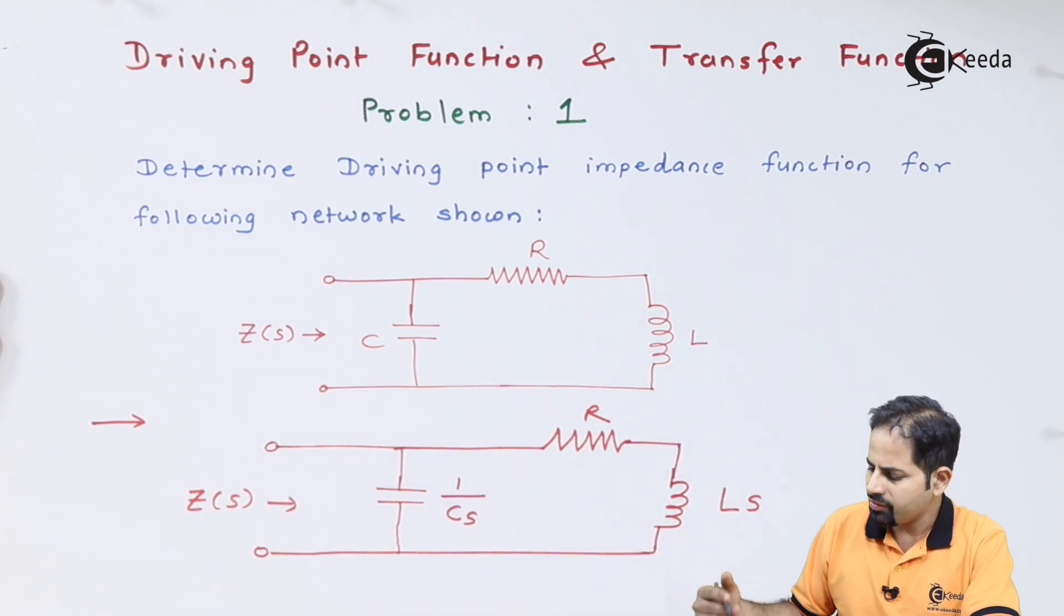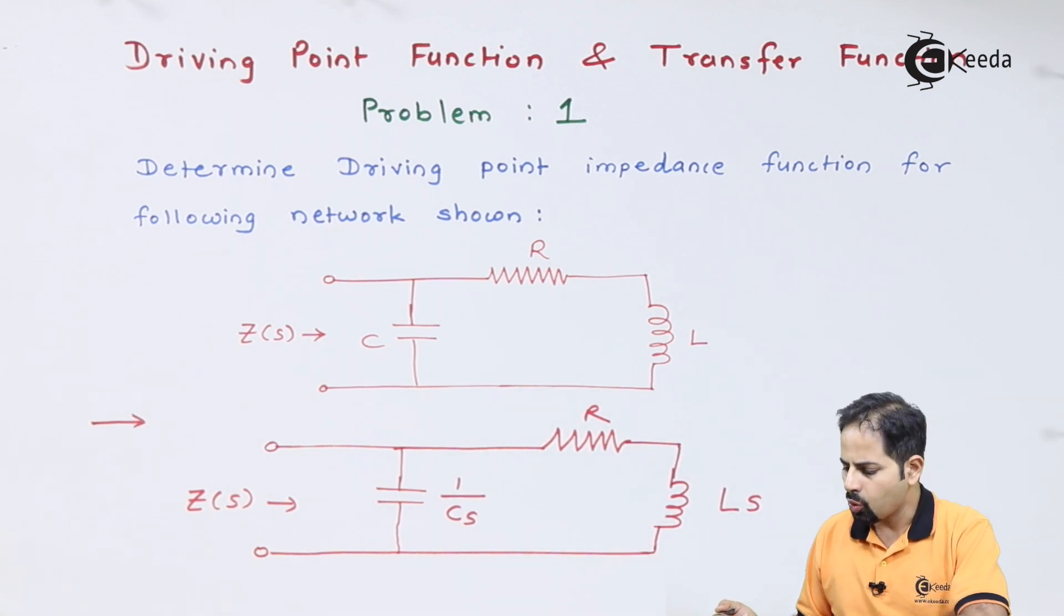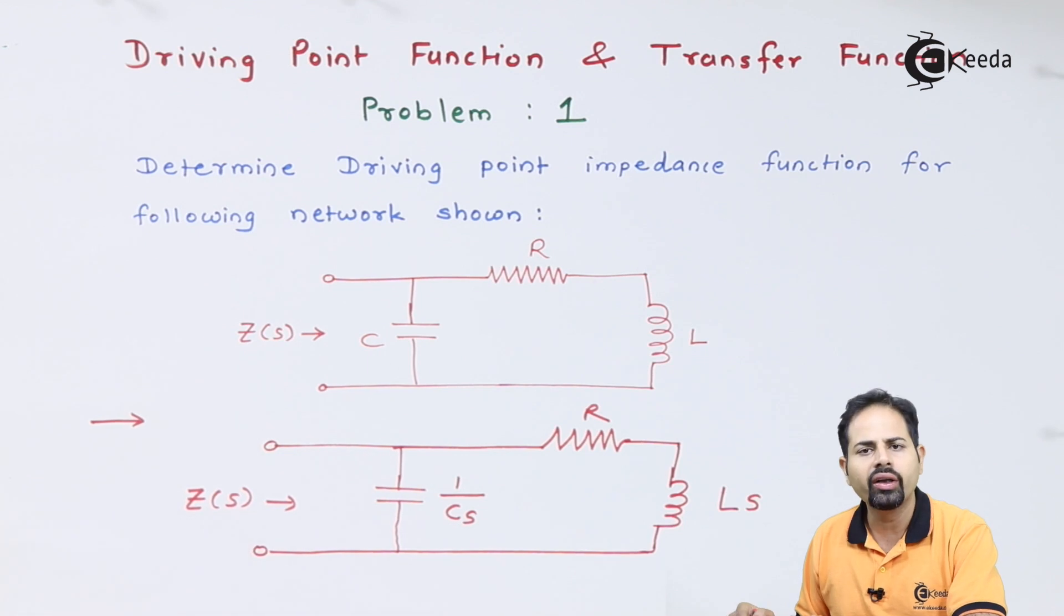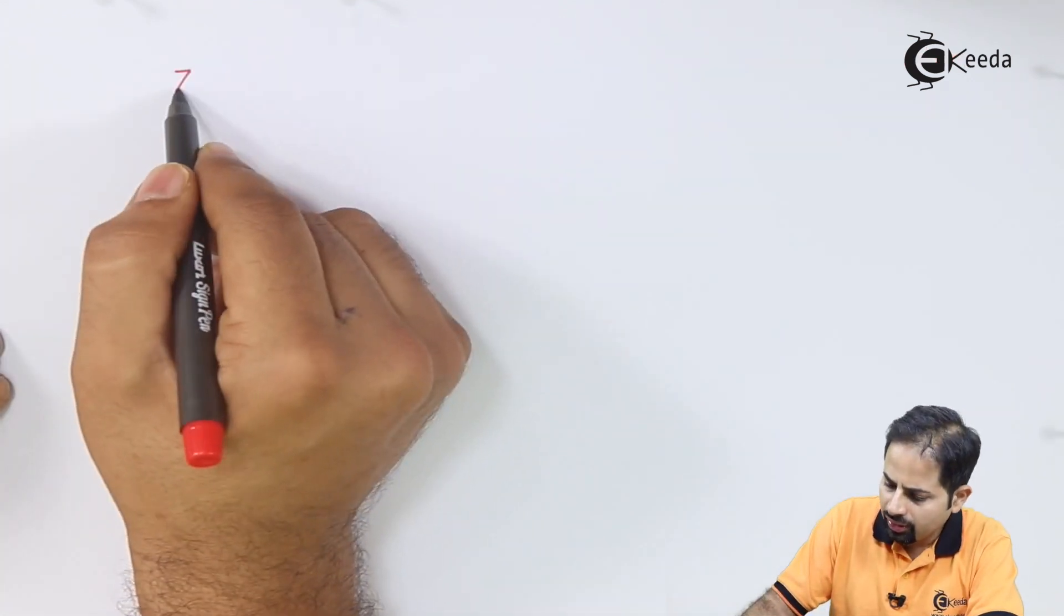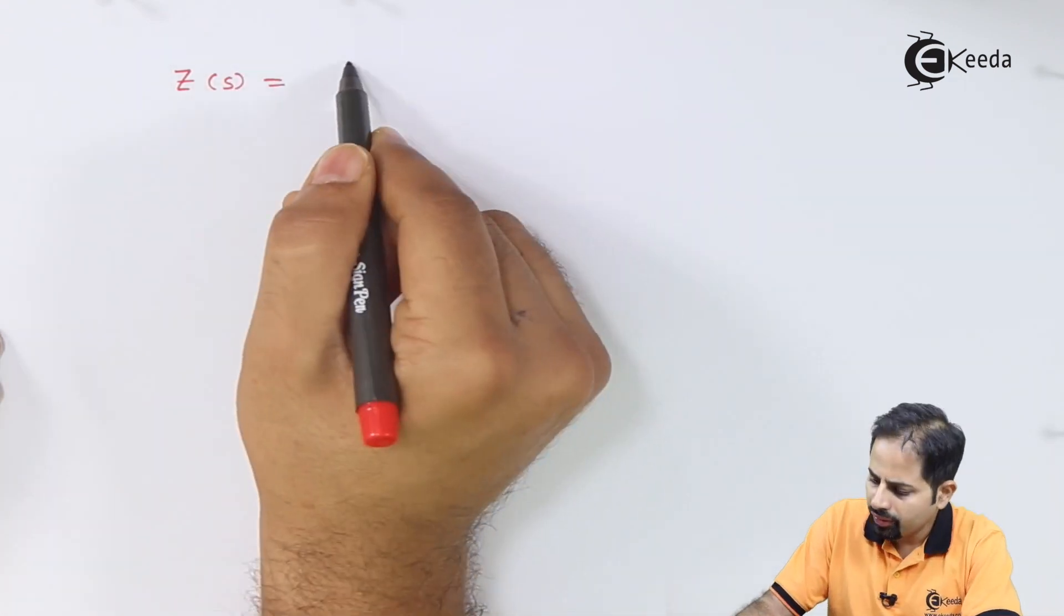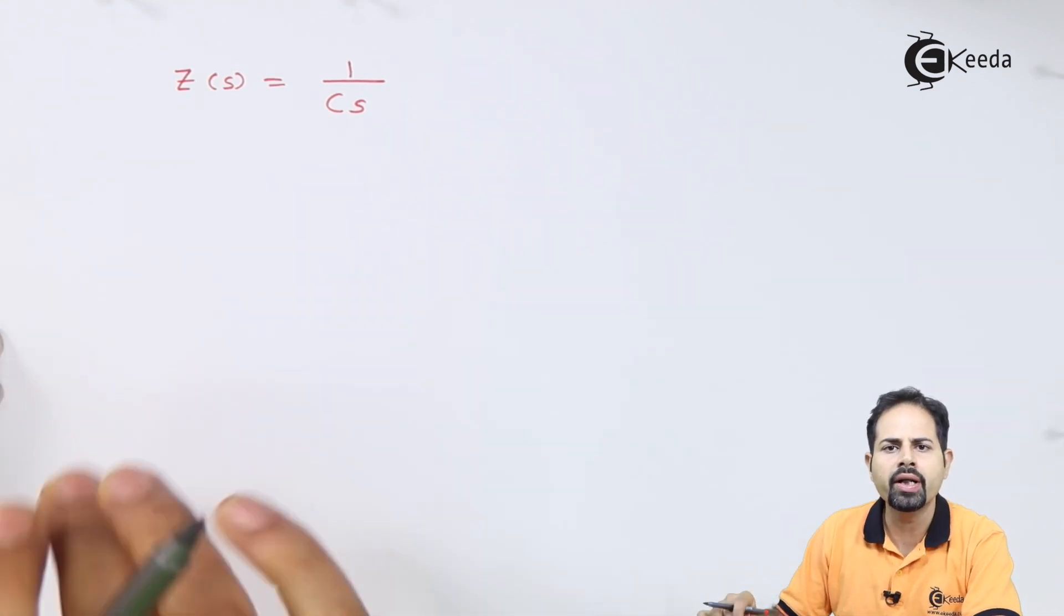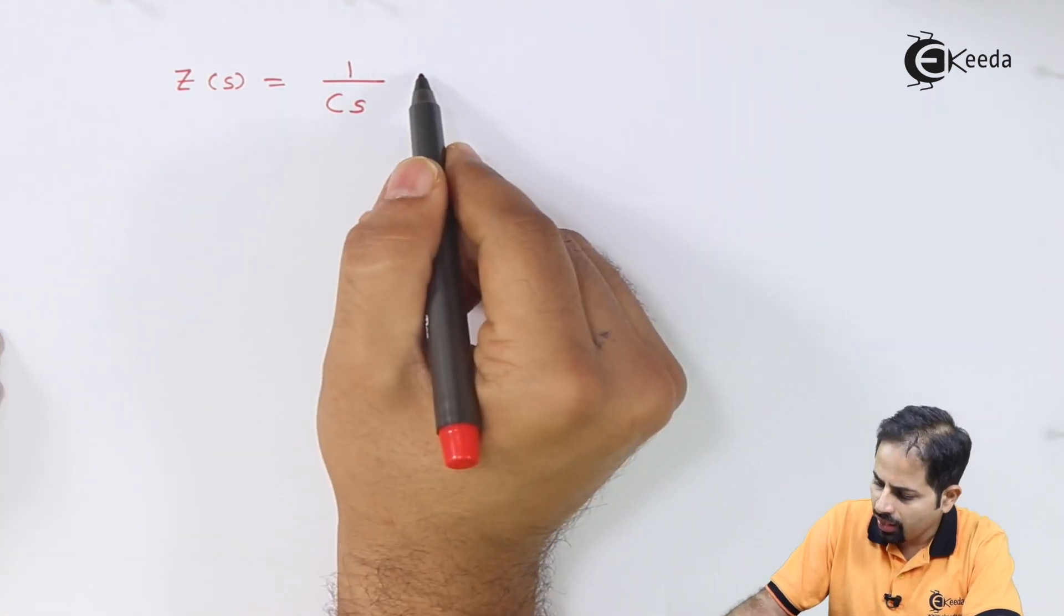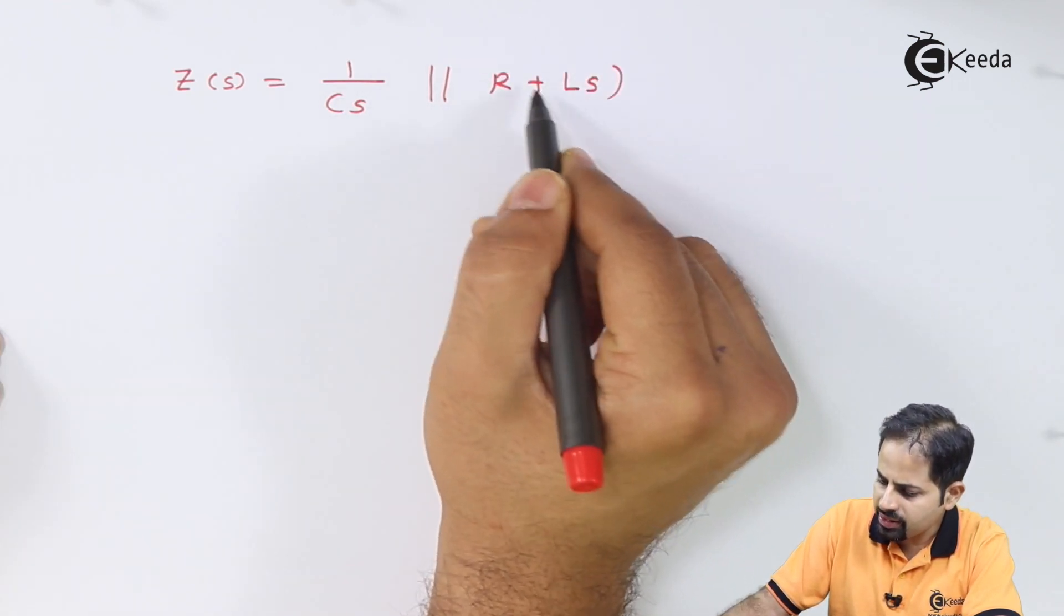Now impedance for this case is very easy because this R and Ls are in series and their combination is in parallel with this capacitor. So equivalent impedance or we will call it as Z(s), so write directly Z(s) is going to be 1 upon Cs which is the impedance of capacitor in parallel with R plus Ls.